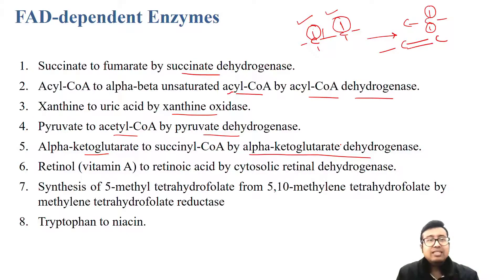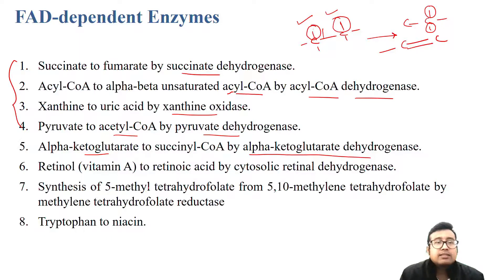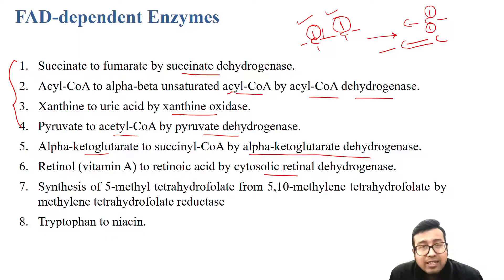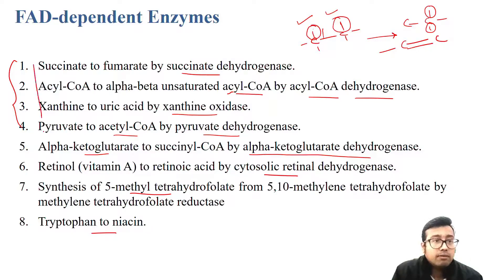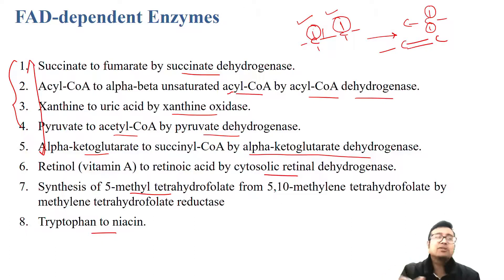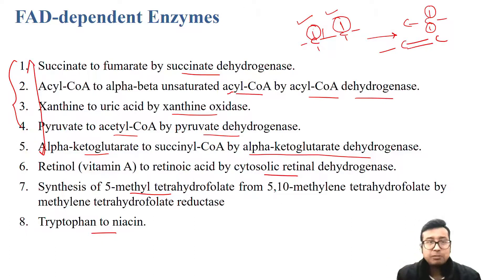You can choose to remember one from these five enzymes. Next, retinol to retinoic acid by cytosolic retinal dehydrogenase, and then 5-methyl tetrahydrofolate, and tryptophan to niacin. These last two are not as important compared to the first five, which are must-remember because you need to know these cycles and pathways anyway.